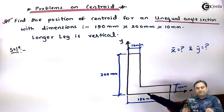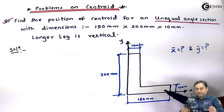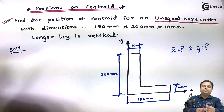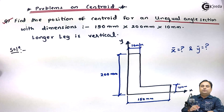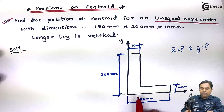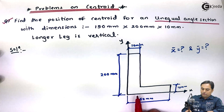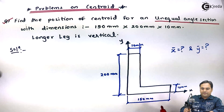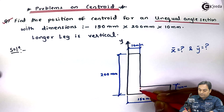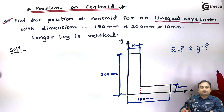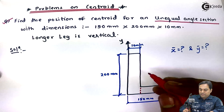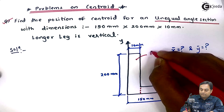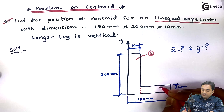If we are solving the problem on centroid and the figure is an angle section, there is no direct formula to calculate the centroid for an angle section. So what we can do here is divide this unequal angle section into two rectangles. The vertical rectangle I will call rectangle 1, and the second one I will call rectangle 2.